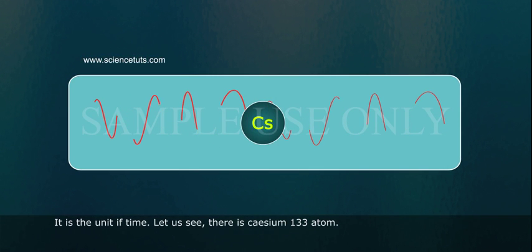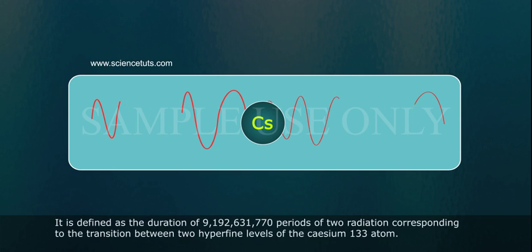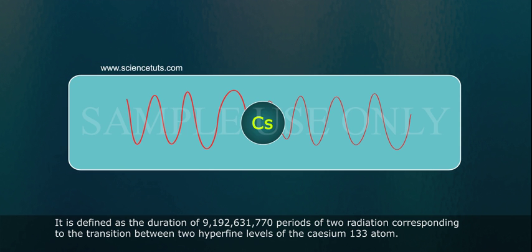Second (S). It is a unit of time. Let us see, there is Cesium-133 atom. It is defined as the duration of 9,192,631,770 periods of radiations corresponding to the transition between two hyperfine levels of the Cesium-133 atom.